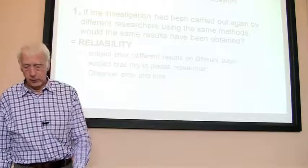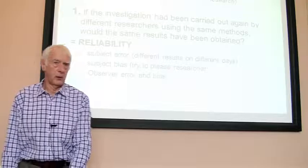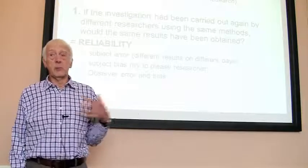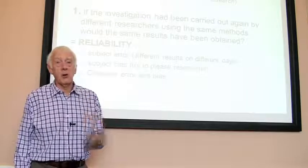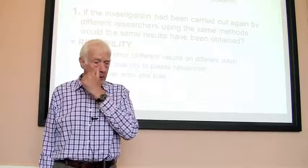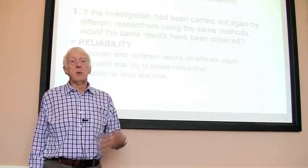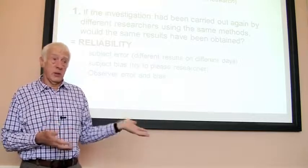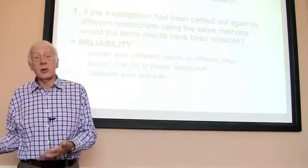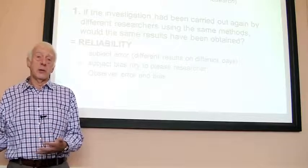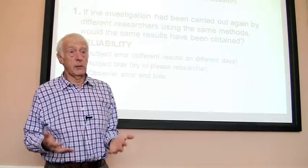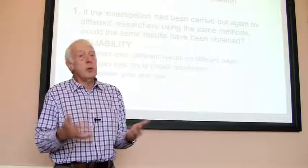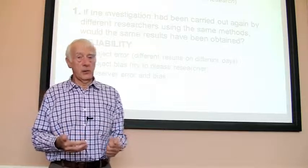Observer bias is a crucial one for experimental designs. The researcher sees things differently because they expect certain kinds of results. There are classic psychology experiments where researchers give certain answers because that's what they expect to see. Different researchers on different occasions might have different biases and therefore results are unreliable. Reliability means research is consistent from occasion to occasion and researcher to researcher — if we redo it, we get the same kinds of answers.